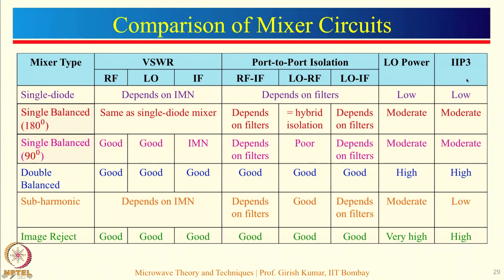Balanced structures have good spurious response, so for balanced mixers we get good linearity and the IP3 point is very high. For image reject mixers similarly. However, for sub-harmonic or single diode mixers, IP3 is very low because there is no balancing action. For single balanced mixers, since balancing is done for only one of the signals, we get moderate IP3 and moderate linearity. Based on these factors, we can select a particular mixer configuration that caters to the demands of our application. This comparative study is very important before starting any mixer design.